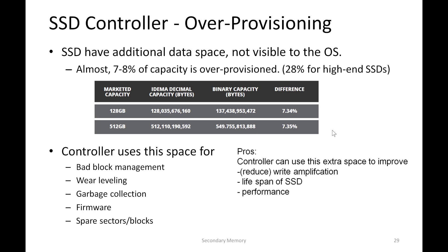The pros of over-provisioning are that the controller can use it to improve the overall lifespan of the SSD, reduce write amplification, and improve performance by achieving multiple parallel transfers simultaneously. On the flip side, out of 550 GB, we are only able to use 512 GB at any given time — so as an end user, we are losing storage space. For high-end SSDs, because of all these managerial aspects the SSD controller cannot sacrifice, there is a higher ratio of over-provisioning.